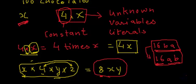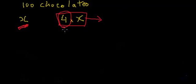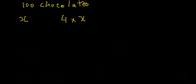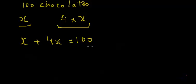So now let's go back to our original problem. I have a bag of 100 chocolates to distribute among both my sons. If the elder one wants X number of chocolates, the younger one will need 4 times as many, which is 4X chocolates. My elder son is getting X chocolates and my younger son is getting 4X chocolates.